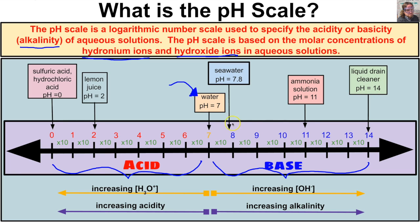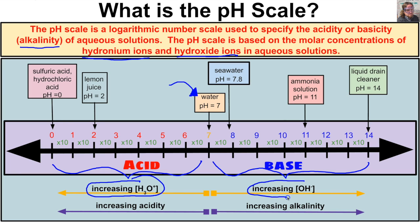Liquid drain cleaner has a pH of 14. As we move from 7 to 0 on the pH scale, acidity increases — meaning the concentration of hydronium ions in the solution increases. Moving from 7 to 14, the solution becomes more alkaline or basic, meaning the concentration of hydroxide ions in the solution increases.